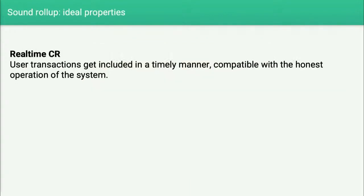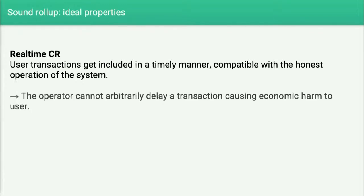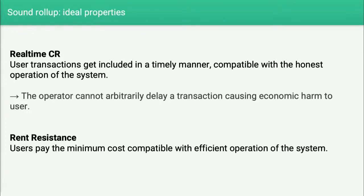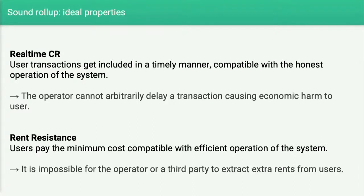What is real-time censorship resistance? You want user transactions to get included in a timely manner, compatible with the honest operation of the system. In particular, the operator cannot arbitrarily delay a transaction, causing economic harm to the user. The other property is rent resistance: users should pay the minimum cost compatible with efficient operation of the system, and it should be impossible for the operator or a third party to extract extra rents.